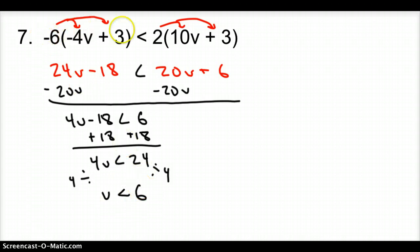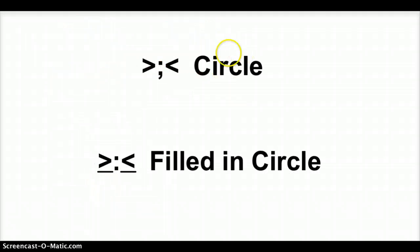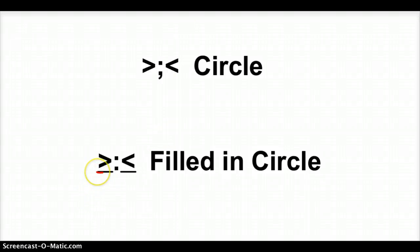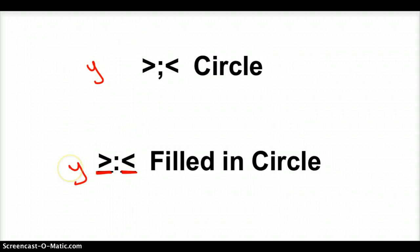So we distributed, then solved like an equation to get V < 6. As a reminder: a greater than or less than sign means an open circle; greater than or equal to or less than or equal to — if you see the bar underneath — means a filled-in circle. Also, if the variable is on the left of the inequality, you can shade following the arrow. That does it for Section 1.5, Solving Inequalities.